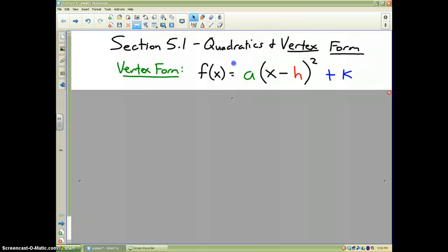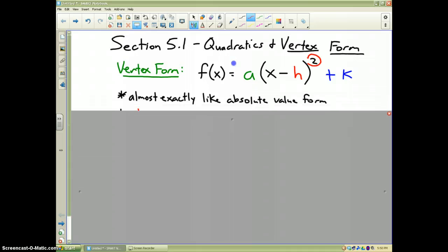f of x equals a parenthesis x minus h squared plus k, and if you notice, the highest power of x is squared. Therefore, we have a quadratic. This is one way that you can write quadratic equations. The other way, we'll study in section 5.2.